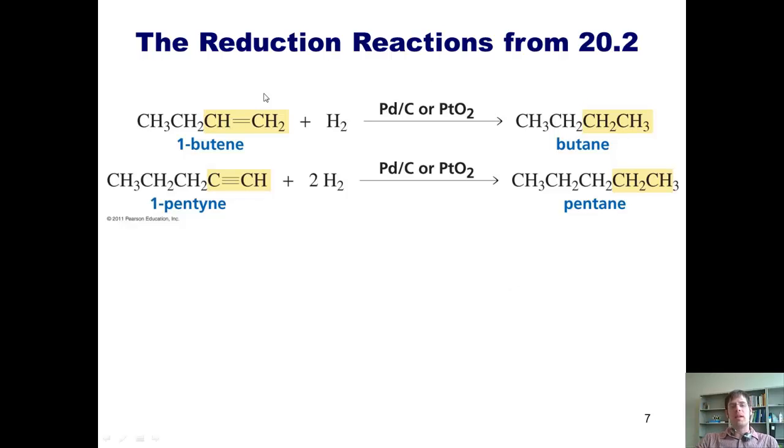As you may remember, if I begin with an alkene, treat it with hydrogen gas and a palladium carbon or platinum catalyst, I add a bunch of hydrogens to this double bond, converting it to single bond alkane.